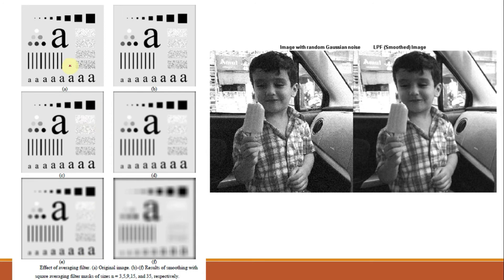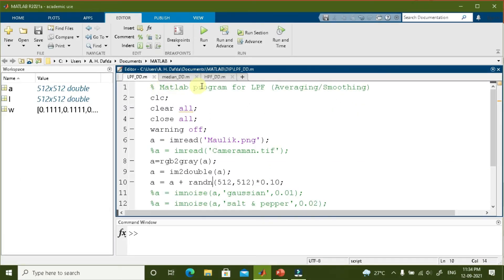This figure shows the effect of the averaging filter: (a) is the original image, and (b) through (f) show results of smoothing with square averaging filter masks of size 3×3, 5×5, 9×9, 15×15, and 35×35. As the mask size increases, the blurring increases, but noise is also removed more effectively. You can see an image with random Gaussian noise added, and after low pass filtering the noise gets removed.